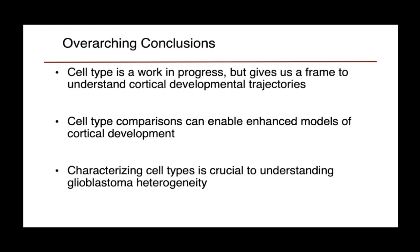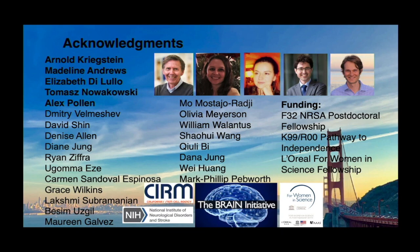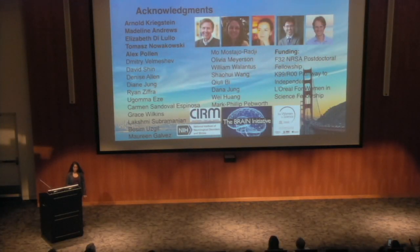Tying together the various points throughout this talk, we know that cell type is a work in progress, but it does give us a framework to understand cortical development trajectories and apply these to models in vitro as well as in disease. It's been a really effective tool in analyzing some of the datasets I've been working on. I'd like to thank my mentor Arnold Kriegstein, who has given me a lot of independence in pursuing a diversity of projects, as well as my collaborators Madeline, Lizzie, Tom, and Alex, as well as others in the lab and my funding sources. I'm happy to take questions.